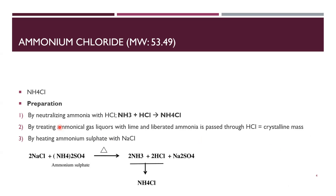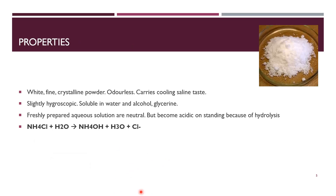Ammonium chloride is prepared by three basic reactions. First, by neutralizing ammonia with HCl, what you get is ammonium chloride. Second, by treating ammonium gas liquors with lime — the liberated ammonia is passed through HCl to get a crystalline mass of ammonium chloride. Third, by heating ammonium sulfate with NaCl, which yields NH3 and HCl, and then a neutralization reaction gives NH4Cl.